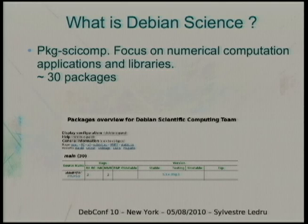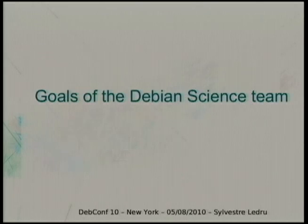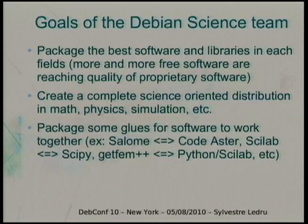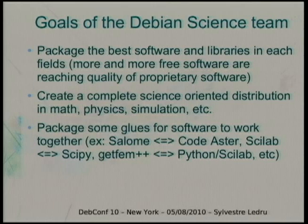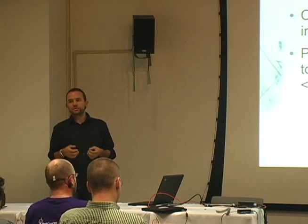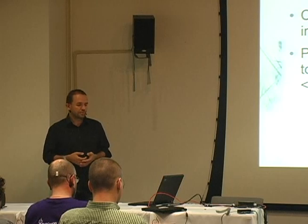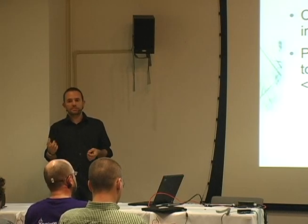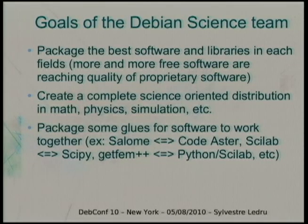pkg-science-comp used to be 60 packages; now it's 30. The goal of Debian Science team is to package the best software and libraries in different scientific fields. There's a lot of very good free scientific software being released, because government — like Europe and France — is pretty happy to give money to finance free software projects in science. The French government gives a lot of money to finance free projects.